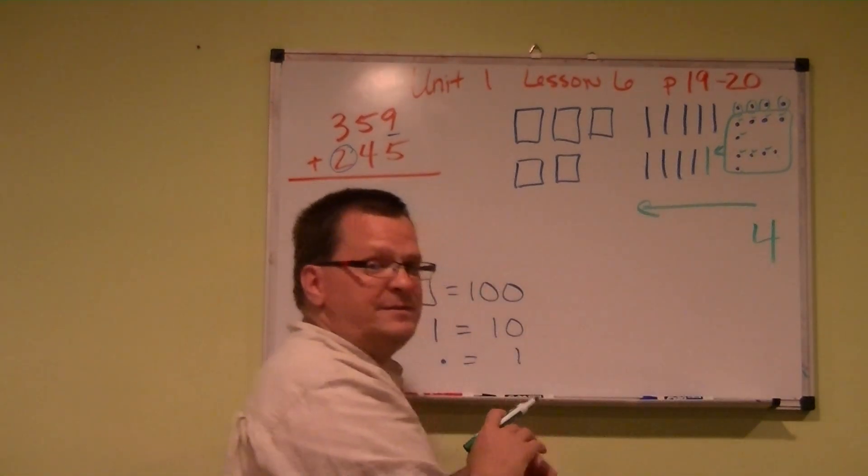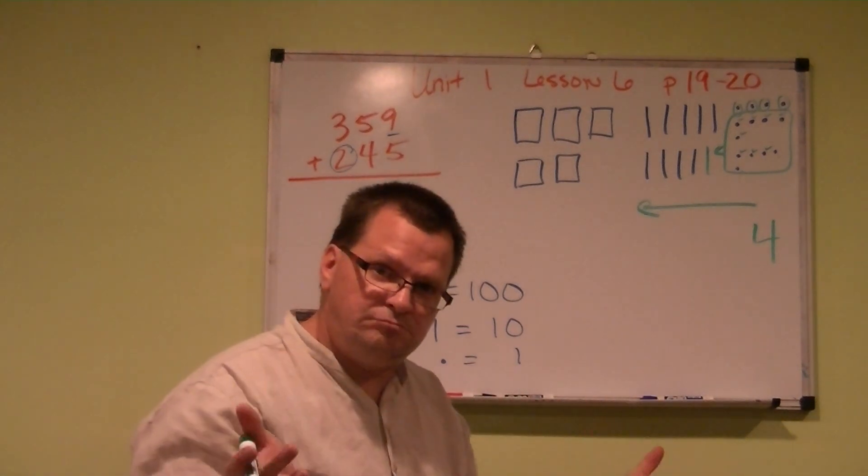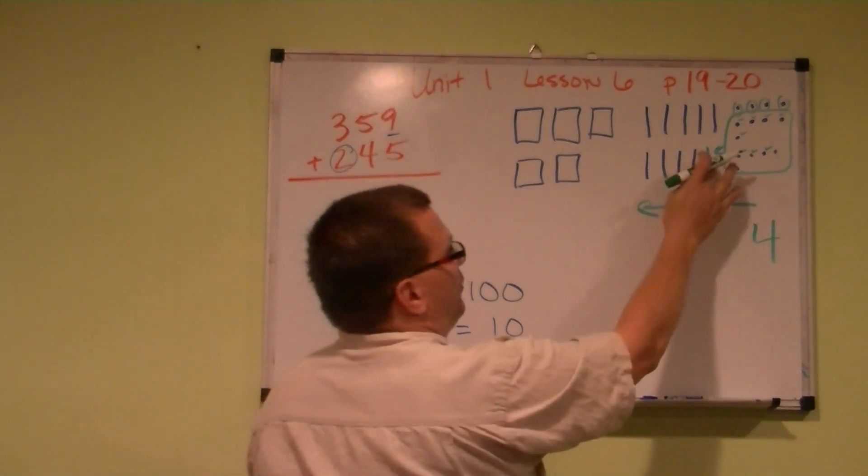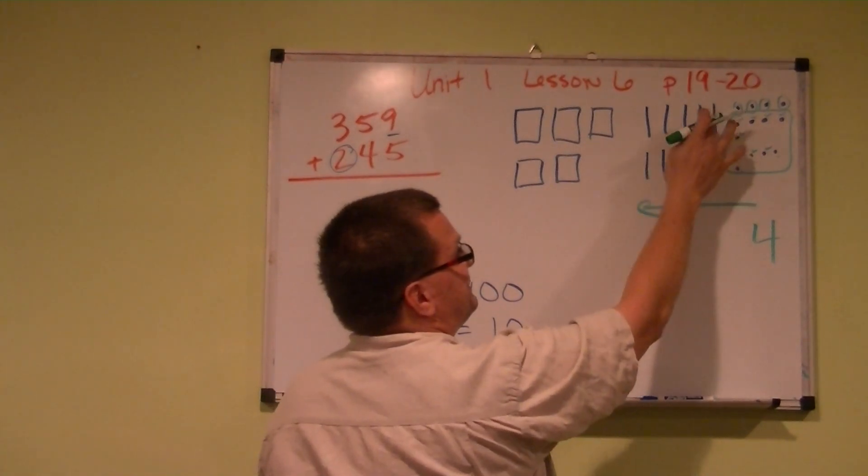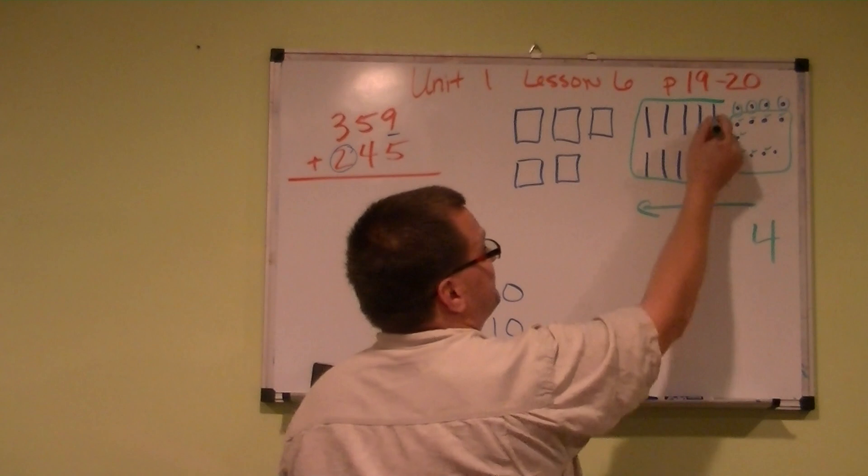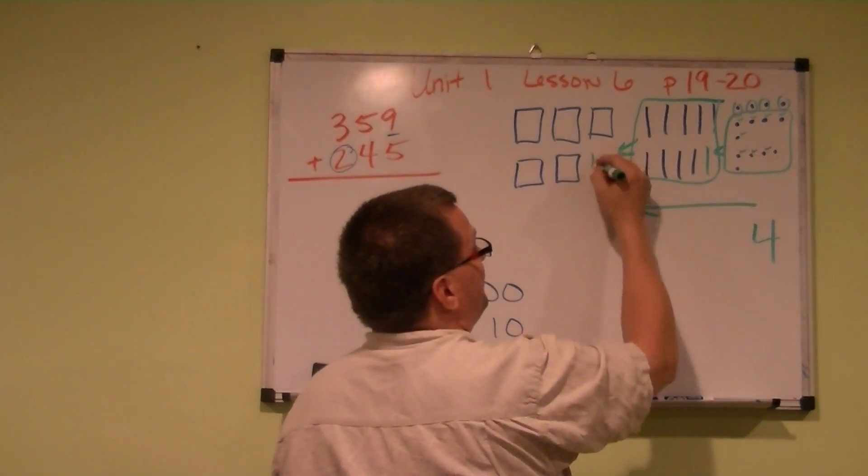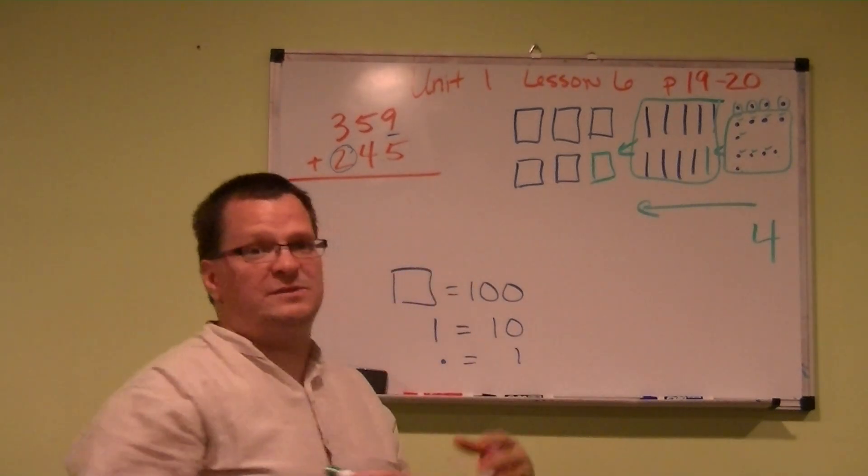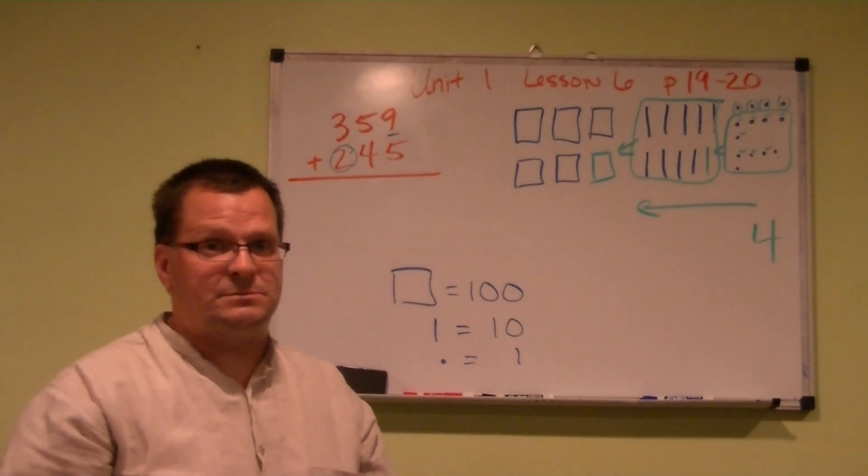Then how many tens make 100? 10. So 1, 2, 3, 4, 5, 6, 7, 8, 9, 10. So all this is now going to move over to there and make a new box. So how many tens do we have left outside the box? 0.